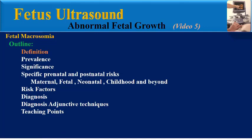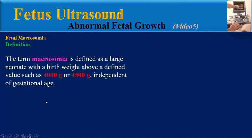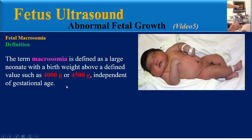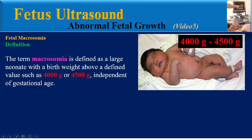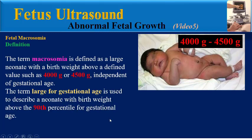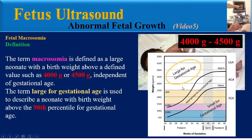Definition: The term macrosomia is defined as a large neonate with a birth weight above a defined value such as 4,000 to 4,500 grams, independent of gestational age. The term large for gestational age is used to describe a neonate with birth weight above the 90th percentile for gestational age.